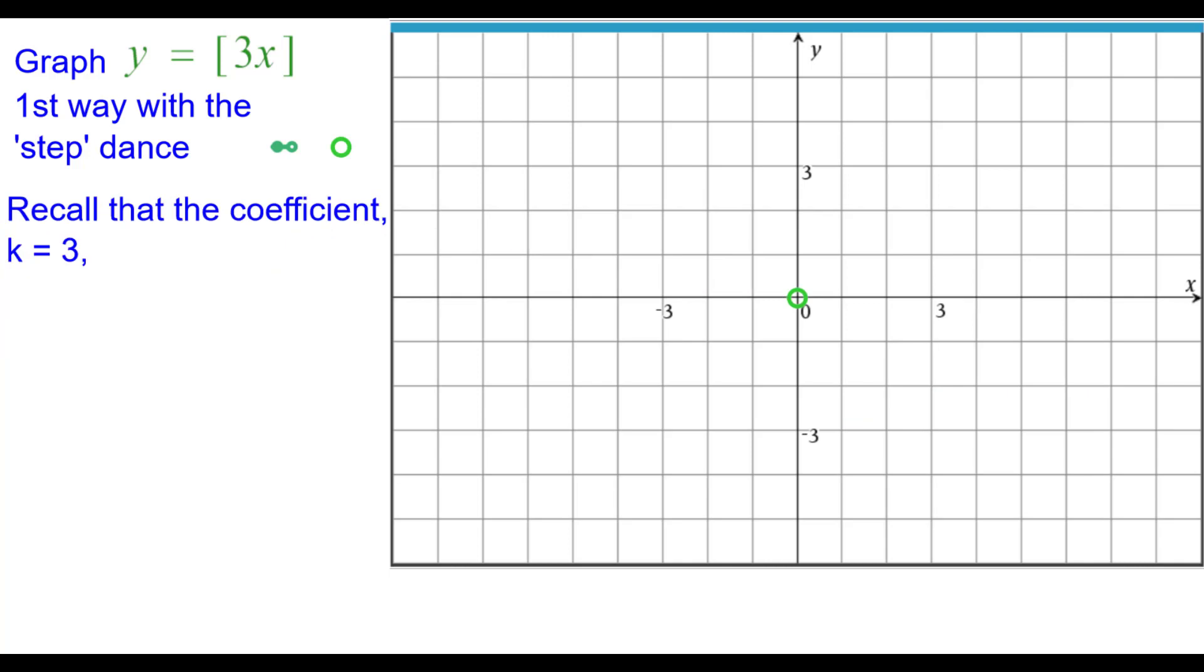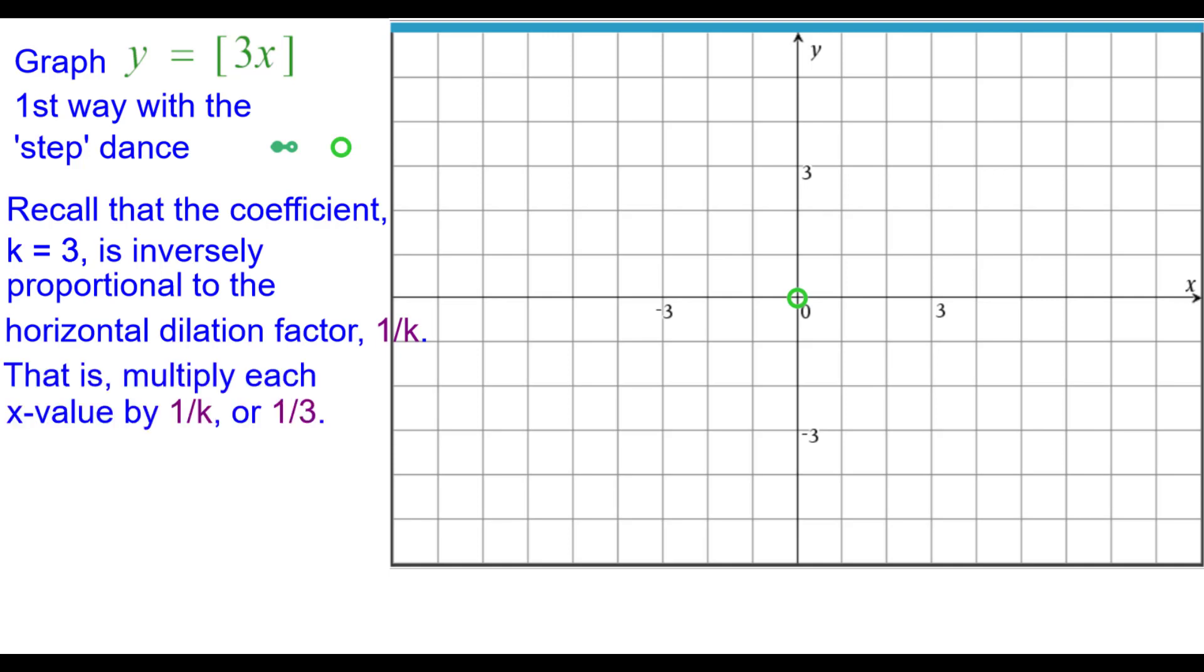Also recall that the coefficient k equals 3 is inversely proportional to the horizontal dilation factor. That is, we are going to multiply each x value by the reciprocal of 3, which is 1 third. And the width of each step is also multiplied by 1 third.